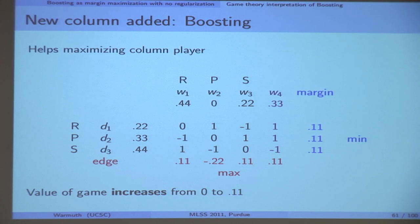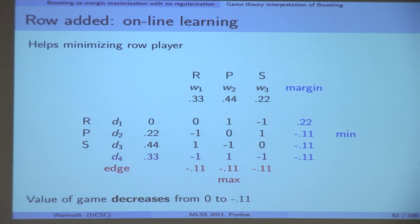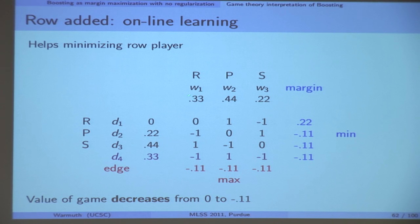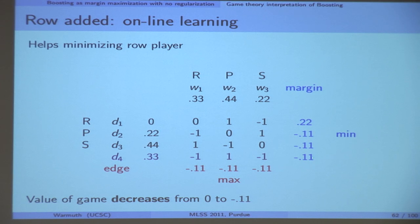Now I add one more row — an example — just for fun. Now I help the minimizing row player. If you give the row player more choices, the value of the game should go down. And indeed, looking at the margins, the minimum margin is minus 0.11, and the value of the game drops.